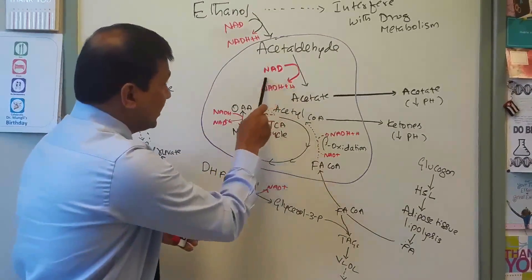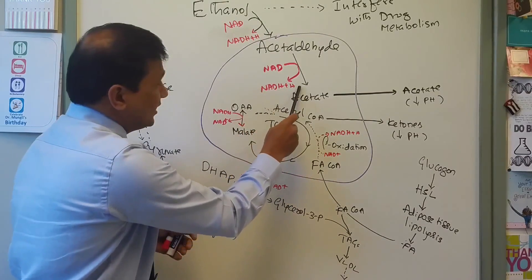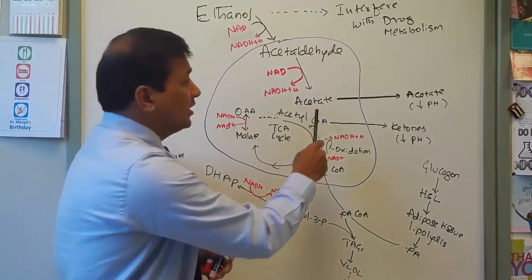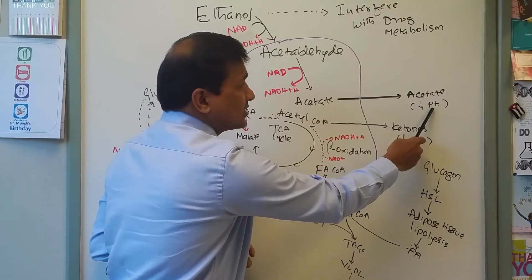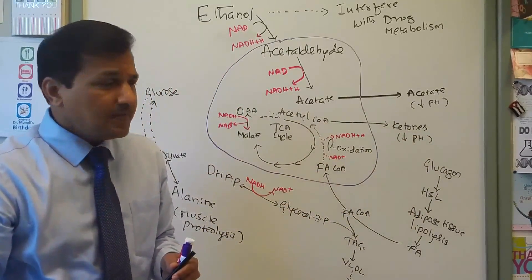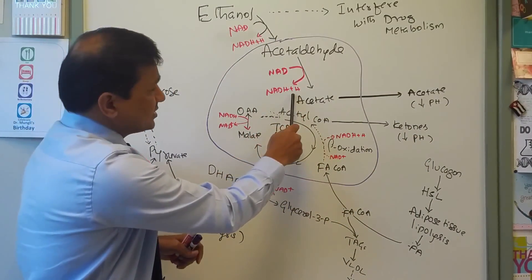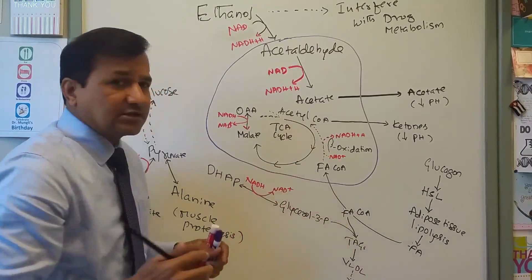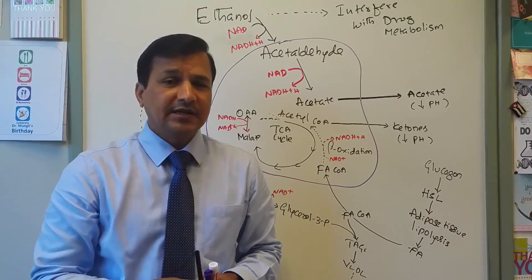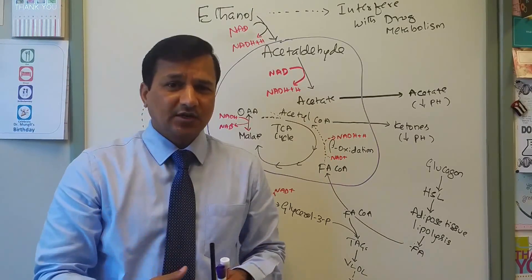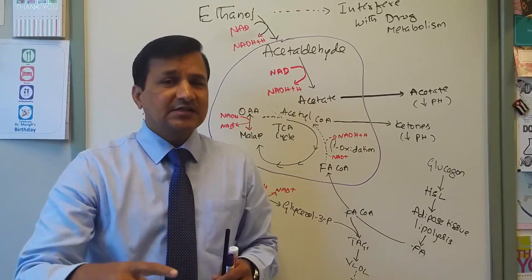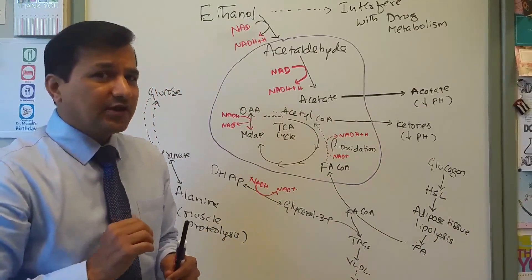Acetate is a non-toxic molecule that is secreted into the blood, raising blood acetate levels and decreasing blood pH. The excess NADH+H+ has a negative effect on three TCA cycle enzymes: isocitrate dehydrogenase, alpha-ketoglutarate dehydrogenase complex, and malate dehydrogenase. Because of this, the TCA cycle slows down.